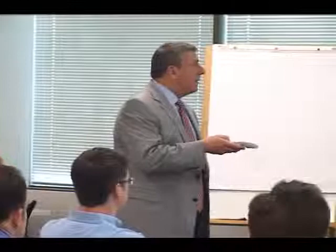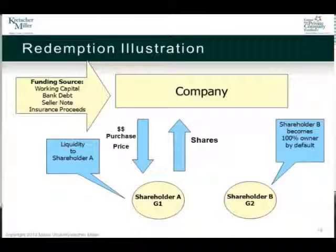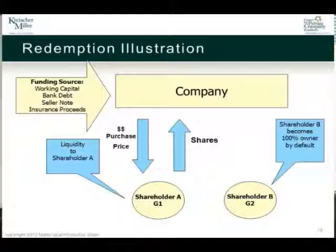So this is what a redemption looks like. Here's our company. There's some kind of funding source for the transaction — it could be working capital, bank debt, or maybe a seller note. What happens is the company purchases the shares. Let's assume there are two shareholders: shareholder A is the departing shareholder, the senior generation person, and shareholder B is the next generation — G2, the second generation. The company exchanges consideration and the shares go back to the company in exchange for that consideration. The company buys them back.